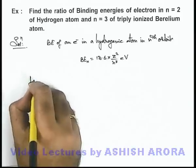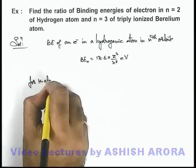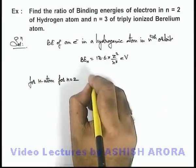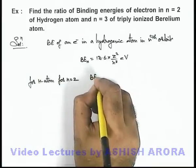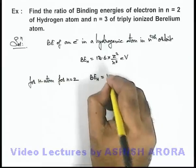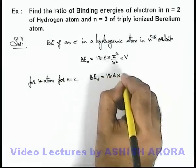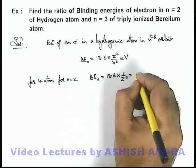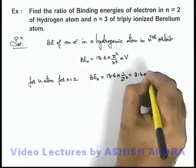For hydrogen atom, we are required to find for n = 2. So we can write binding energy of hydrogen atom in n = 2 as 13.6 × 1²/2² = 13.6/4 = 3.4 electron volts.